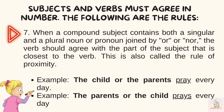Number seven, when a compound subject contains both a singular and a plural noun or pronoun joined by 'or' or 'nor,' the verb should agree with the part of the subject that is closest to the verb. This is also called the rule of proximity. Example: the child or the parents pray every day. Another one: the parents or the child prays every day.